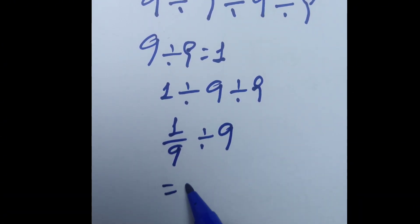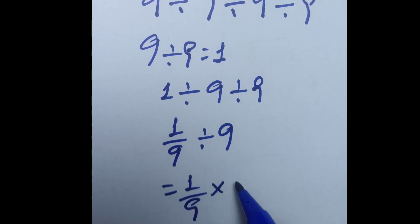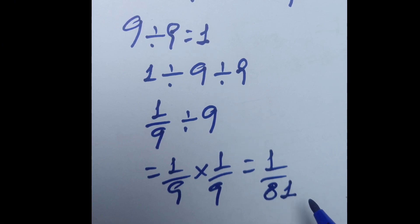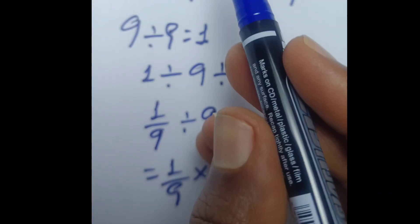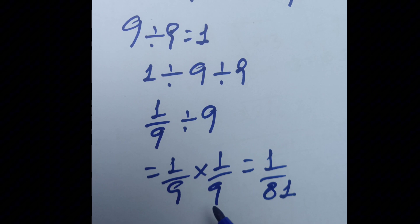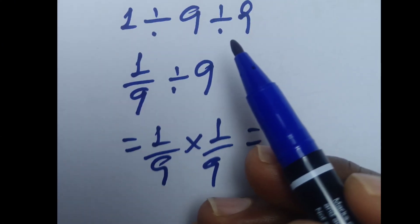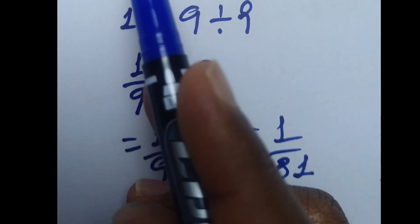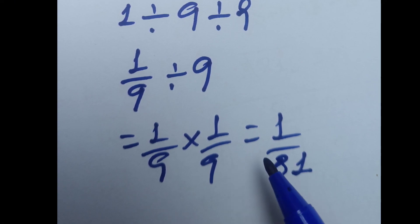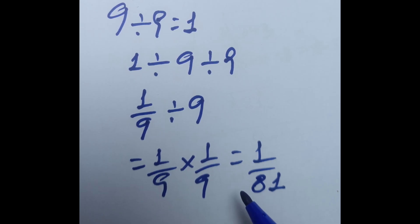That equals 1/9 times 1/9, which equals 1 over 81. So the correct answer is 1/81 — quite different from 1. Understanding this concept is crucial for more complex calculations in algebra, programming, and real-world problems. When division signs appear in a row, they must be processed sequentially from left to right. Thanks for watching, please subscribe to my channel for more videos.